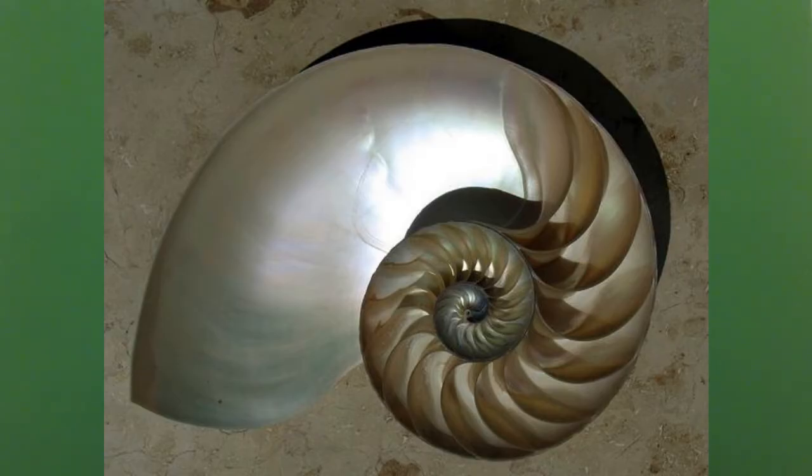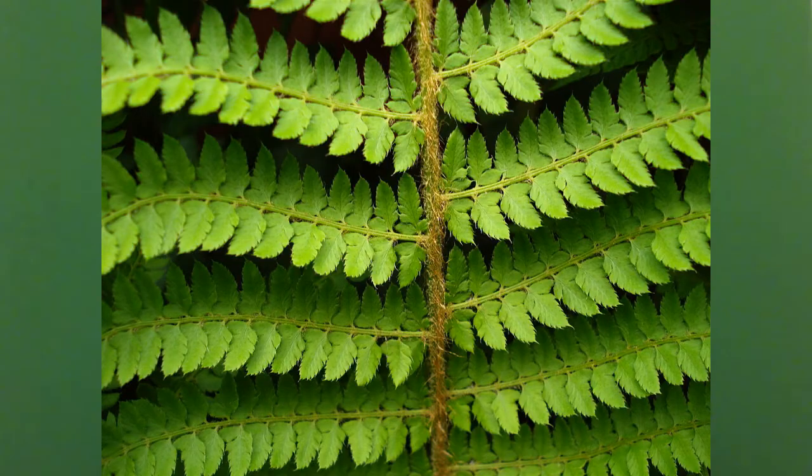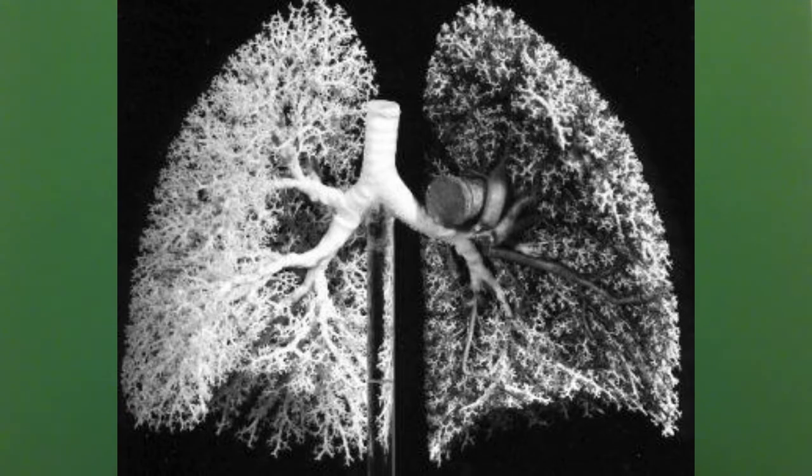I am now making a big jump to fractals. One property of fractals is self-similarity. Another property is that they are recursive — you can zoom into the picture of a fractal to infinite. A part of the fractal will be similar to all other parts of the fractal, but not exactly equal. Here are some pictures of fractal patterns in nature: nautilus shell, broccoli, fern, lungs, tree.